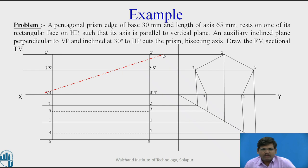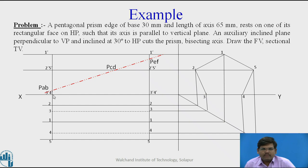The cutting plane is perpendicular to VP and inclined at 30 degrees to HP. Now consider the points where this cutting plane cuts the edges of the prism — the bottom edge, the vertical edge, and the other bottom edge — giving 2 points each, for a total of 6 points where the cutting plane cuts the solid. We name them PA, PB, PC, PD, PE, and PF.